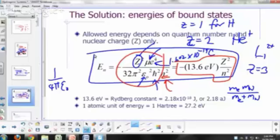So this 13.6 electron volts, also known as Rydberg's constant, in joules, that's 2.18 times 10 to the negative 18, or you can say that's 2.18 attojoules. 10 to the negative 18 is, the prefix for that is attojoules.